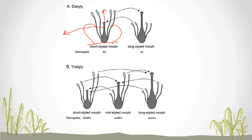This is called the style. These four antenna-like projections are called stamens, and the tops are called anthers. This is where the pollen grains are produced. The pollen grains go and drop onto the top surface of the stigma, and this facilitates the fertilization process.